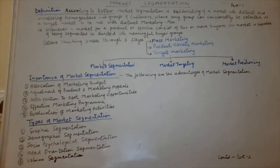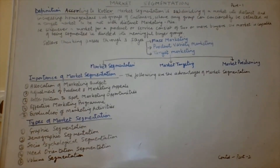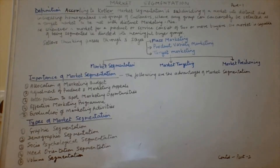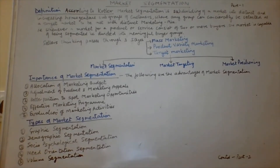In target marketing, the seller identifies market segments and selects one or more of them. The marketing manager has a choice to select either one or more of the different groups, because with different groups, they are more or less homogeneous in nature, so he may cater to different needs of customers belonging to different sets of groups. Products and marketing mixes are tailored to each segment.